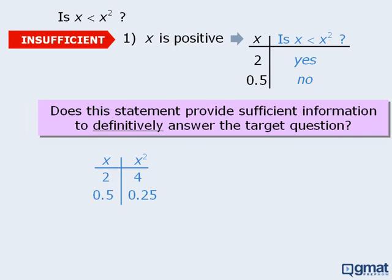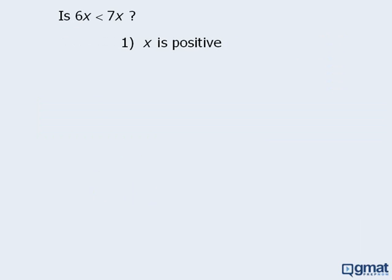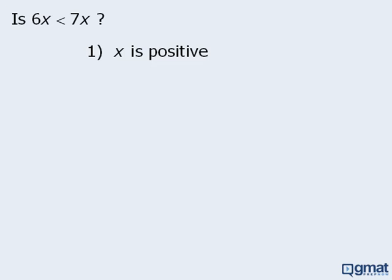Now you may have noticed that in all three examples, the statement was insufficient. You will find that the table method works best for statements that you suspect might be insufficient. The reason for this is that if we cannot demonstrate that there are two different answers to a target question, then the results will be inconclusive. Here's what I mean. The target question here is: is 6x less than 7x? Statement 1 tells us that x is positive.